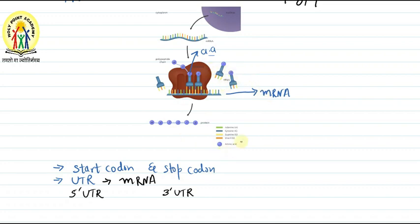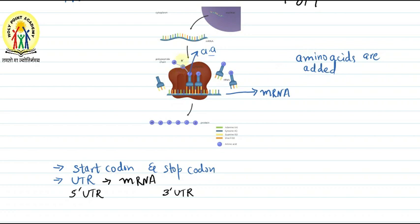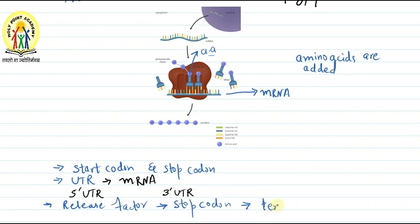After initiation, the tRNA moves from codon to codon — from one codon to the next. As it moves, amino acids are being added one by one, causing elongation of the polypeptide chain. At the end, a release factor binds to the stop codon, and at that point the process of translation is terminated.